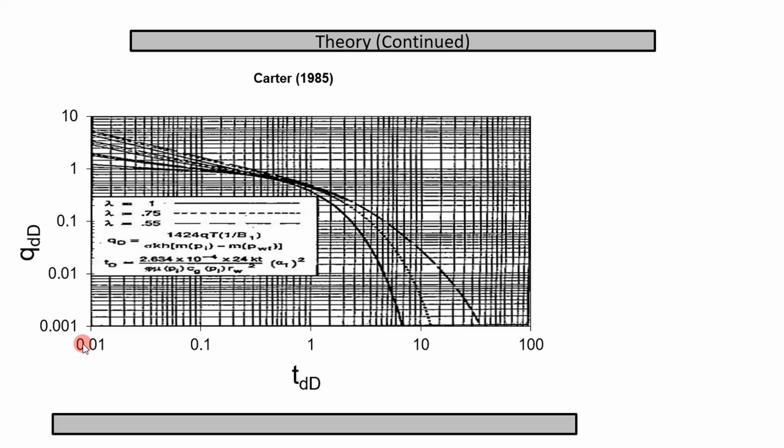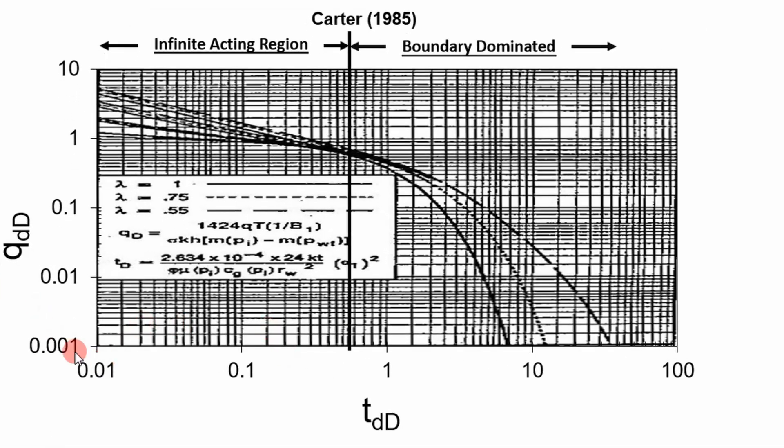Some theory behind the Carter type curve is essentially it separates the infinite acting region and the boundary dominated region. So to the left here, your computer generated curves represent the infinite acting region. These curves go into a vortex, which is basically the interface between infinite acting and boundary dominated flow. After this, you have your boundary dominated region right here.